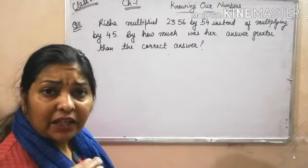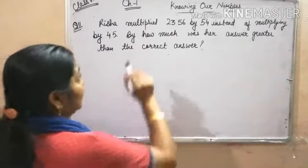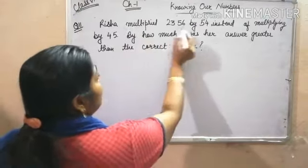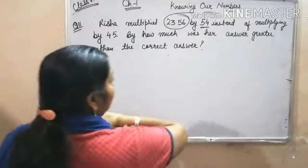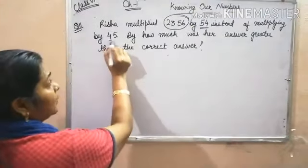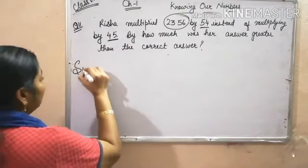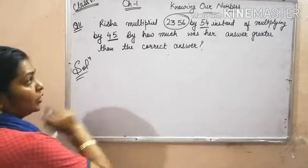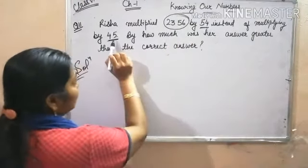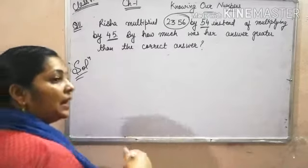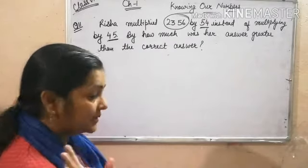I will tell you a very easy trick to solve this problem. Risha multiplied 2356 by 54, but she had to multiply it by 45. One method is to first multiply 2356 by 54, then 2356 by 45, and subtract both the answers.